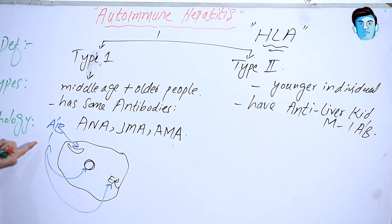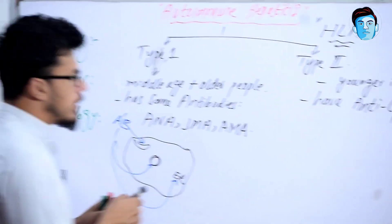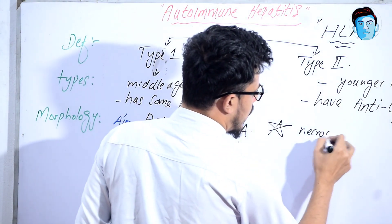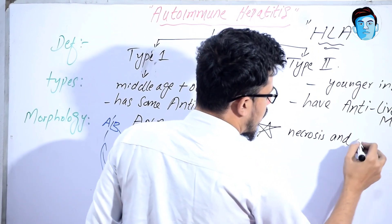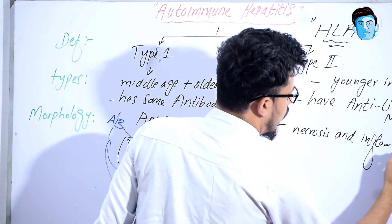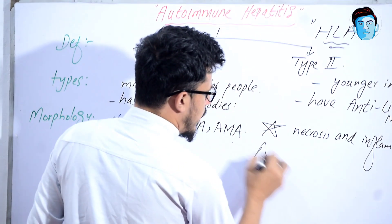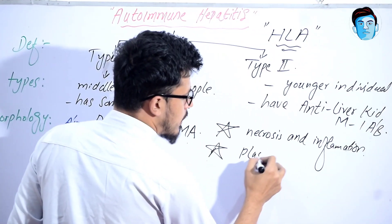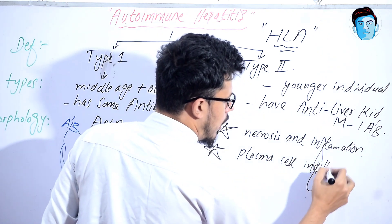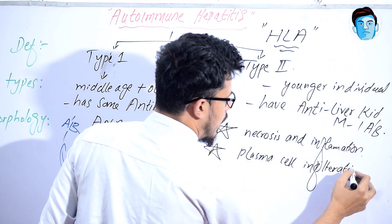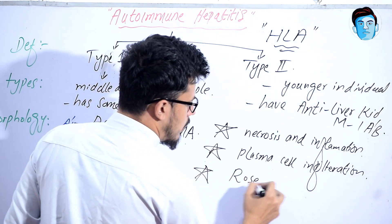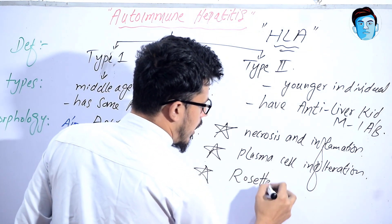Now let's talk about the morphology. In the morphology you will find necrosis and inflammation of the involved hepatocytes. Along with that, there will be plasma cell infiltration and rosette hepatocytes.